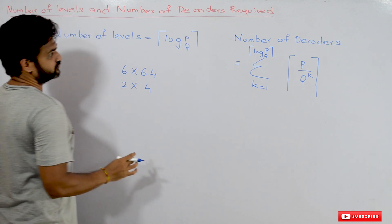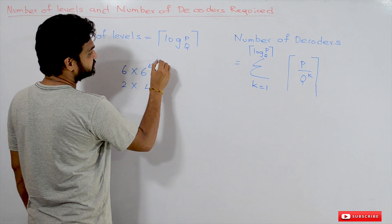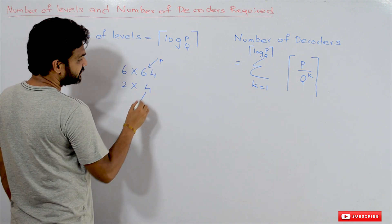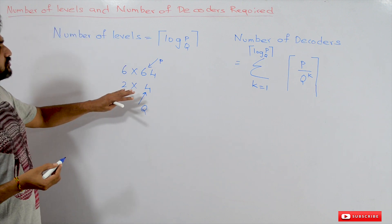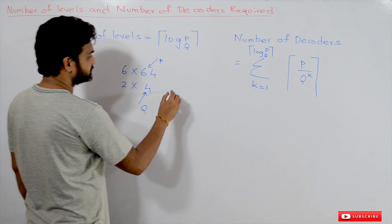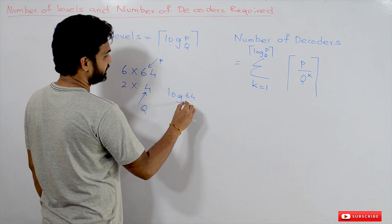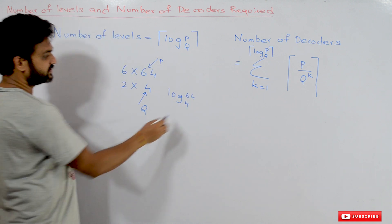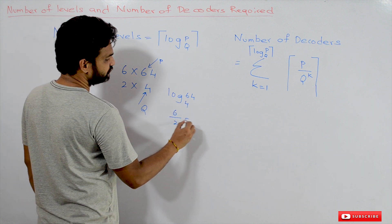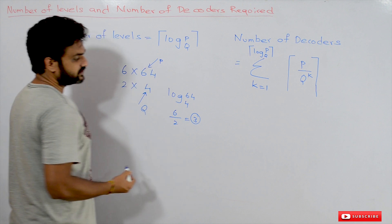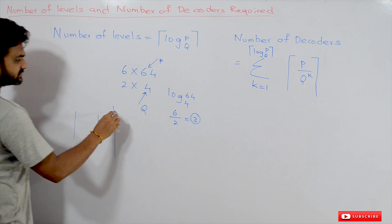The formula for number of levels is log of p base q. Here p is 64 and q is 4, so it is log of 64 base 4, which equals 6 divided by 2, which equals 3. So three levels are required to construct a 6 by 64 decoder.